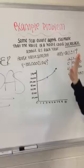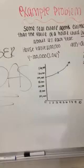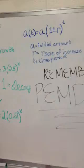And now we have this example problem. It says some real estate agents estimate that the value of a house could increase about 4% each year. The house value is $100,000. That's a lot of money. And you will use this equation to figure out this graph.